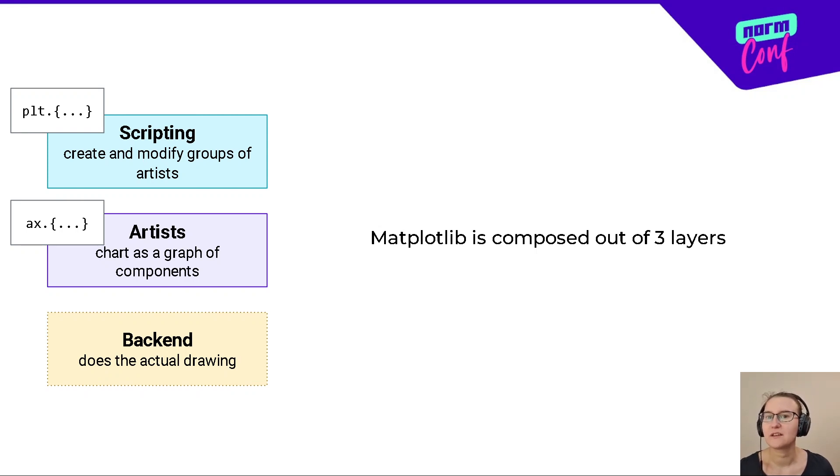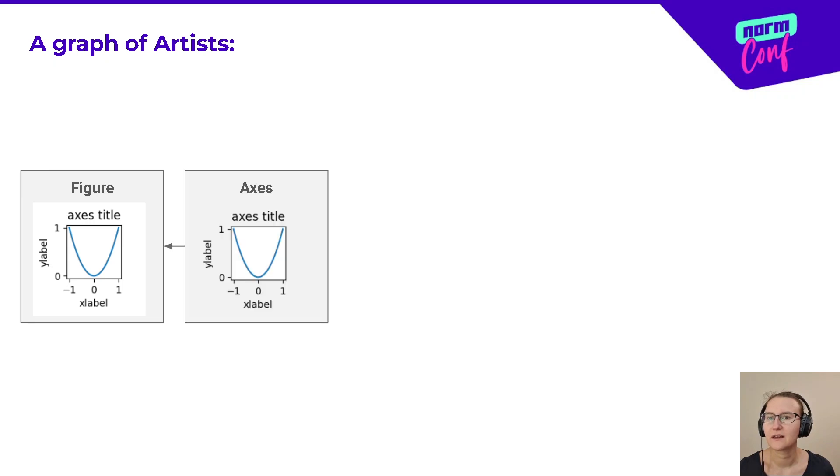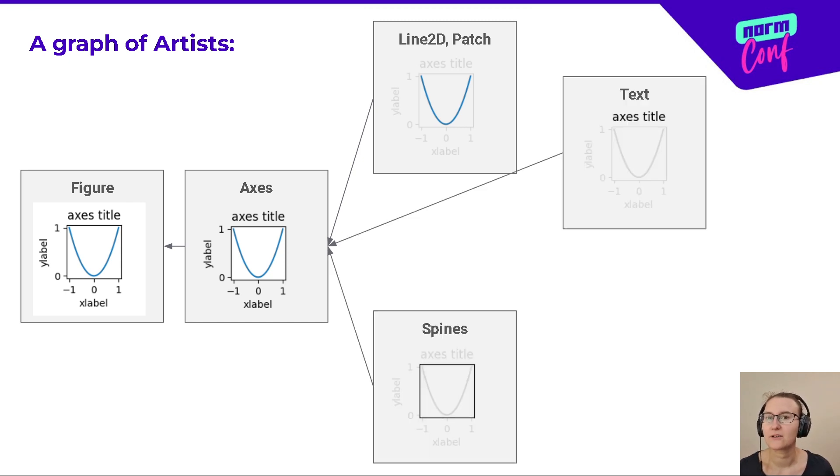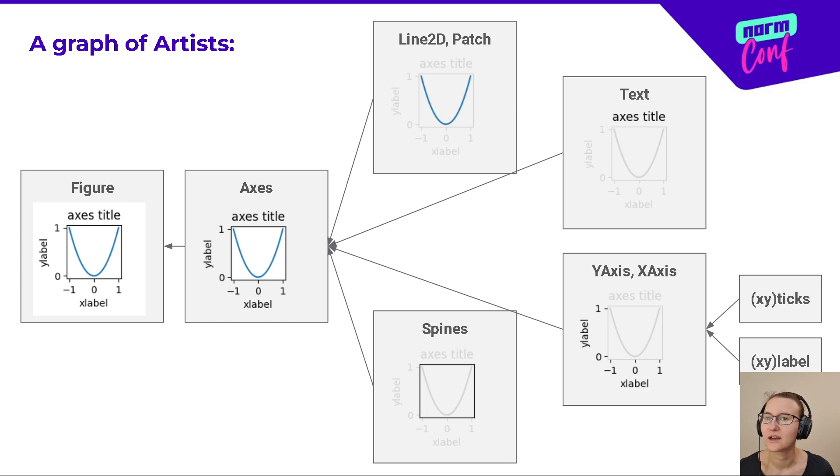And what do I mean when I say that the chart is a graph of artists? I mean that on the top, we have a topmost parent container, a figure. Inside a figure, you have axes. And inside axes, you have more granular components, like line or patch, which are the geometrical features that represent your data, text objects, spines, or xy axes, and their children. Each of these objects can be stored in a variable and modified in place directly.